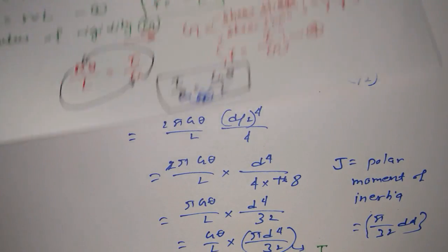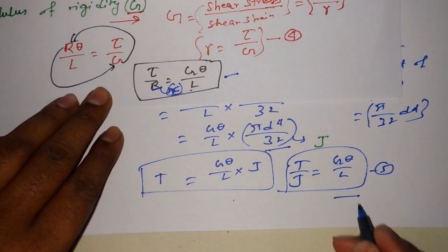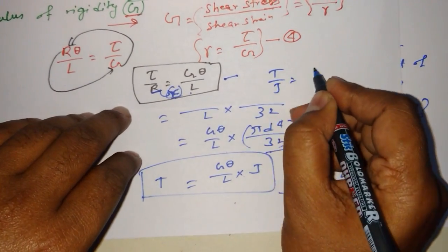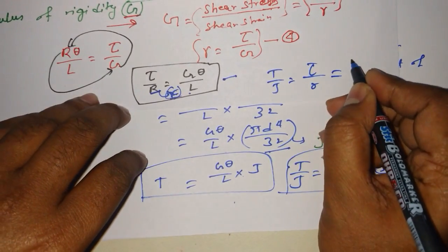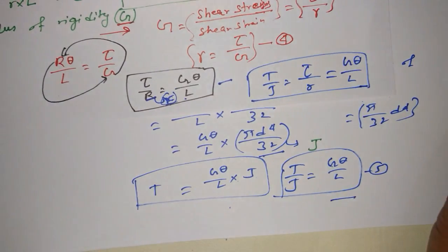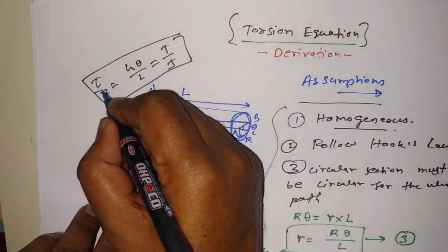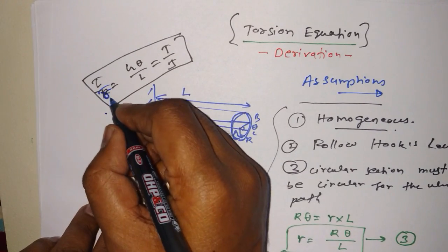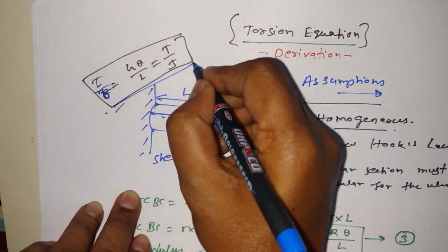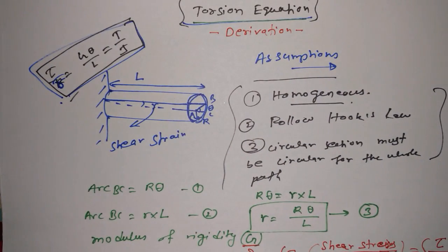Now combining equation 5 and the earlier result, from both equations we can write the complete torsion equation: T/J = tau/r = G·theta/L. This equation is known as the torsion equation, and this is the full derivation of the torsion equation.